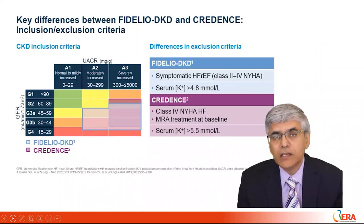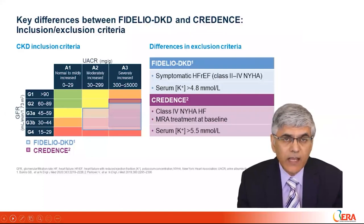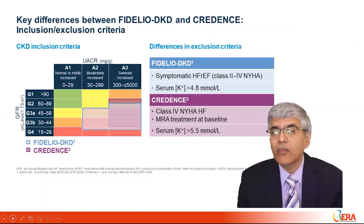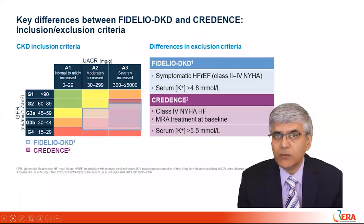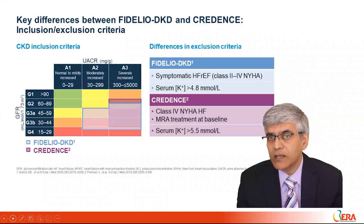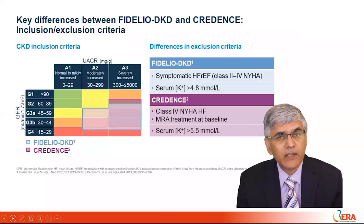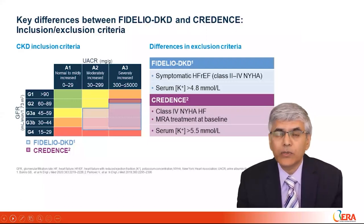Important differences between Fidelio-DKD and CREDENCE trial designs include: first, inclusion criteria — eGFR 25 to less than 75 in Fidelio-DKD versus 30 to 90 in CREDENCE. Second, urine albumin-to-creatinine ratio of 30–5,000 mg/g in Fidelio-DKD versus 300–5,000 mg/g in CREDENCE. Third, Fidelio-DKD excluded patients with symptomatic heart failure with reduced ejection fraction, whereas CREDENCE excluded patients with heart failure only if treated with an MRA. In Fidelio-DKD, potassium greater than 4.8 was an exclusion criterion, whereas in CREDENCE, patients with potassium greater than 5.5 were excluded.